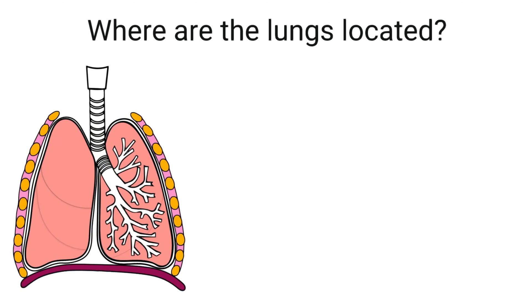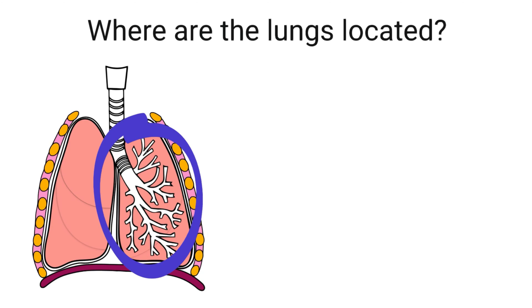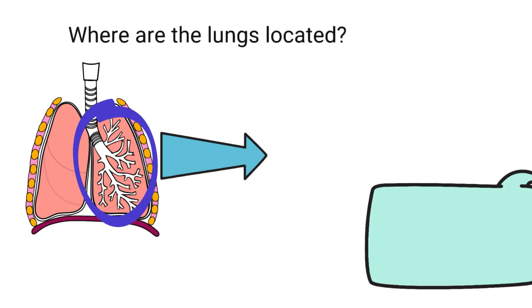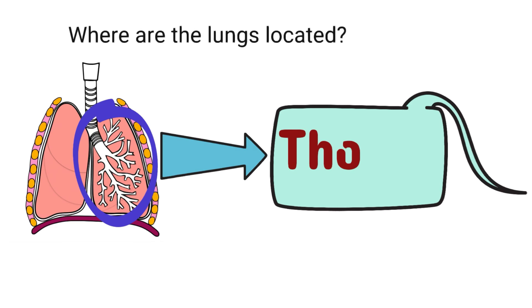Where are the lungs located? Before we answer that question, the lungs and those tubules are the main features of the respiratory system, but don't forget that the respiratory system begins with the nose and the mouth also. The lungs in particular are located in the chest cavity, or your thorax, sometimes referred to as the thoracic cavity.